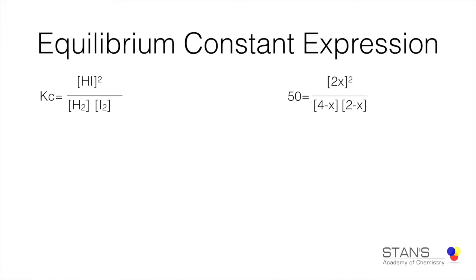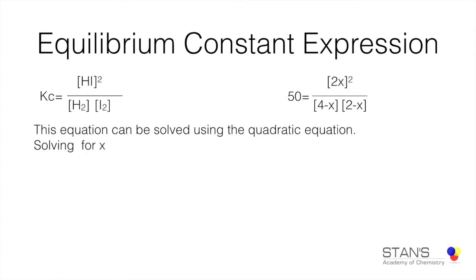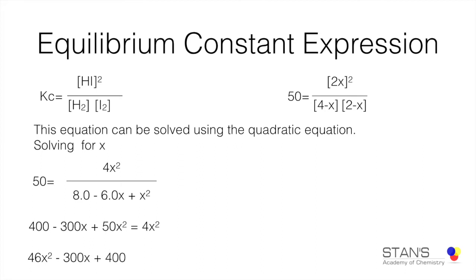This expression is not a perfect square, so solving for X requires the quadratic equation. Rearranging and solving gives: 46X² − 300X + 400 = 0. We will use the quadratic formula X = (−B ± √(B² − 4AC)) / 2A to determine the value of X.